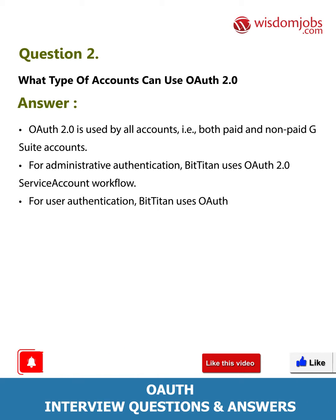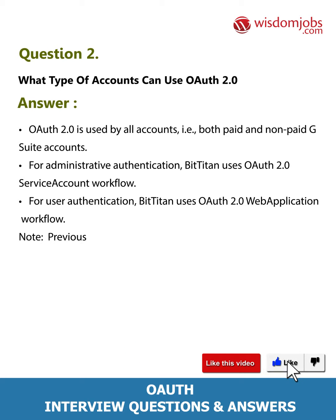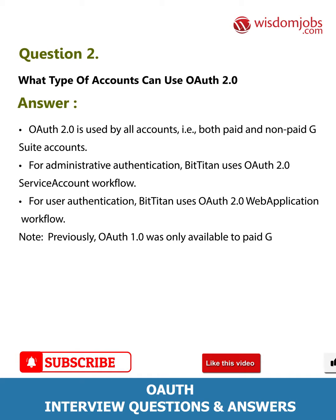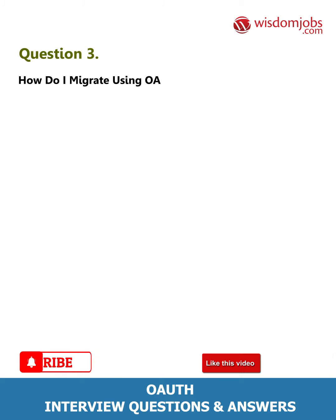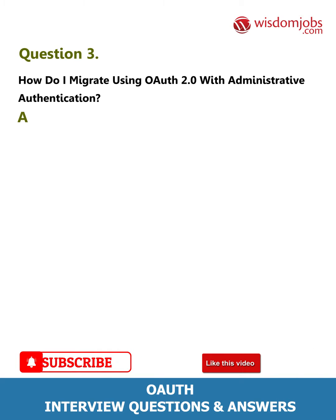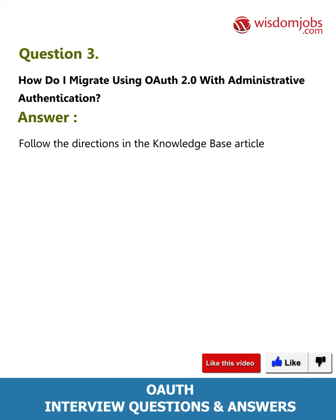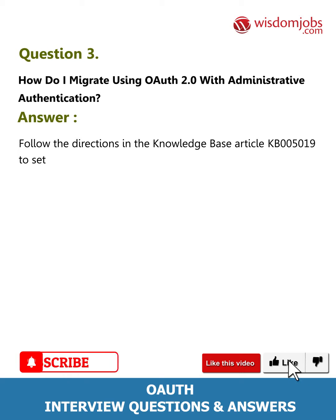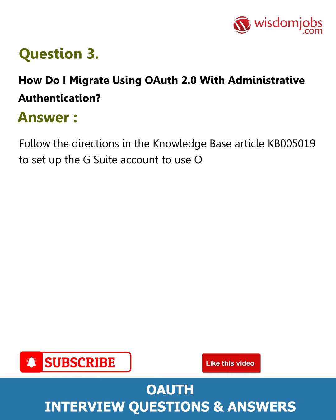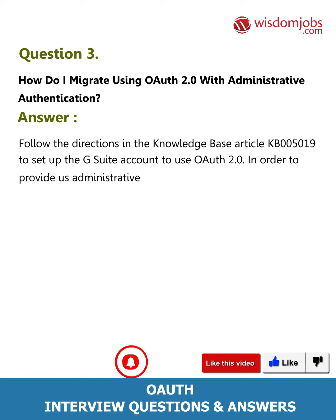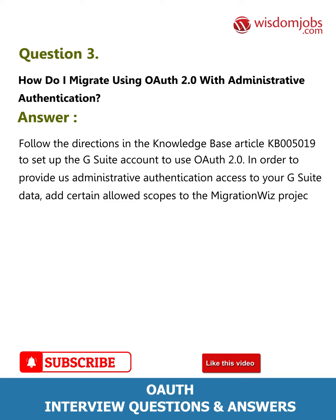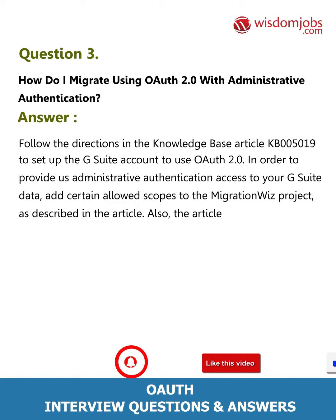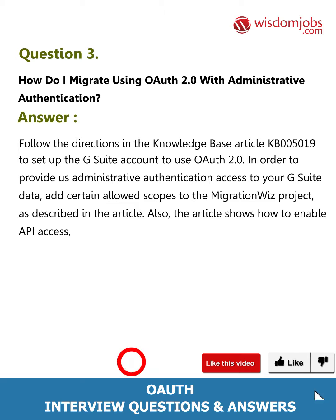For user authentication, BitTitan uses the OAuth 2.0 web application workflow. Note: previously, OAuth 1.0 was only available to paid G Suite accounts, namely G Suite for Business and Education. Question 3: How do I migrate using OAuth 2.0 with administrative authentication? Answer: Follow the directions in knowledge base article KB005019 to set up the G Suite account to use OAuth 2.0, in order to provide administrative authentication access to your G Suite data. Add certain allowed scopes to the MigrationWiz project as described in the article. The article also shows how to enable API access, which is required for performing a Google Drive migration.